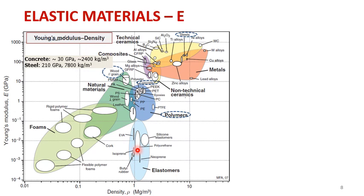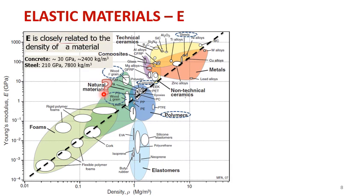One more point worth noting is wood. As you can see, it shows wood parallel to grains and wood perpendicular to grains — even though they have the same density because we are testing the same wood, they have quite different Young's moduli. This illustrates that modulus of elasticity is closely related to the density of the material, but also depends on direction.